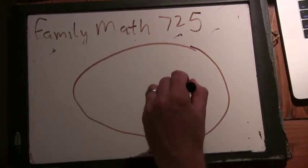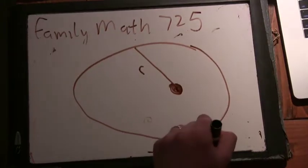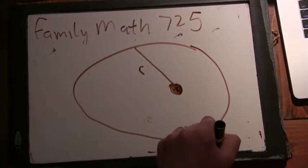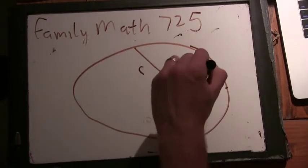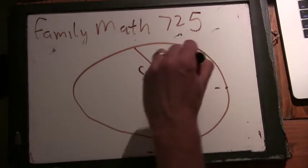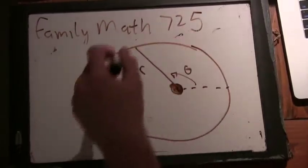So if you call the distance from the center of the Earth to the satellite r, which is going to be a function of the angle here of theta, you know, sort of looking at the plane that the satellite is rotating.